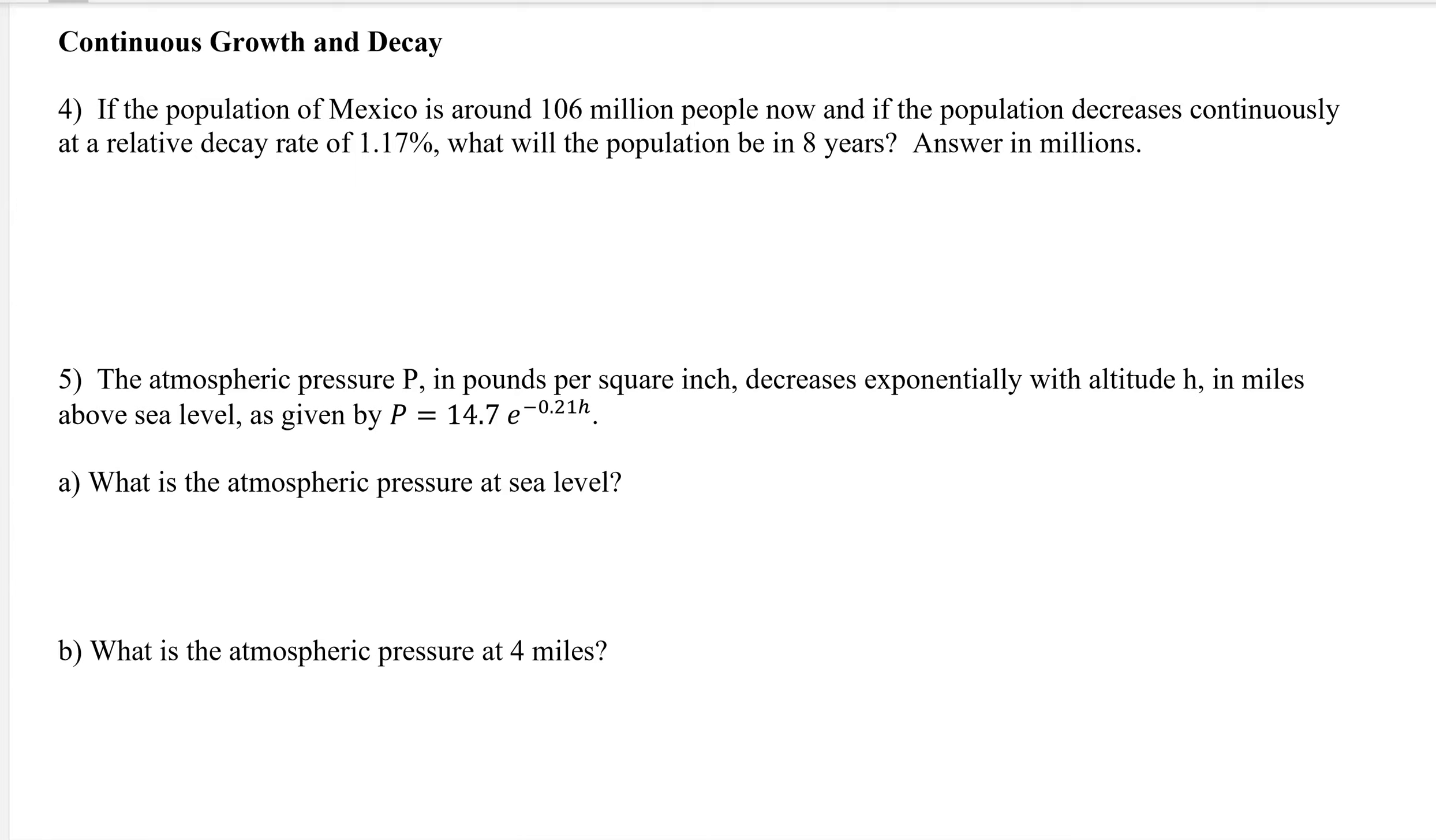This is part two of our continuous growth and decay rate. They're going to be giving us the problems, and we're going to pull out that initial amount and that decay or growth rate and put it together into our function. So if you remember, our continuous growth or decay is of this form. And so what we're looking for is our A₀ and our k in the problem so that we can create an exponential function.